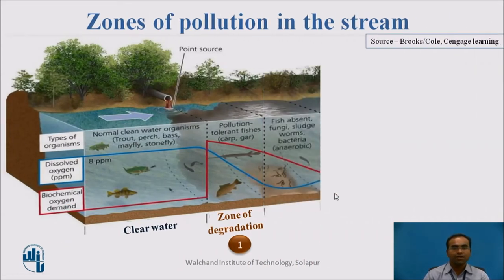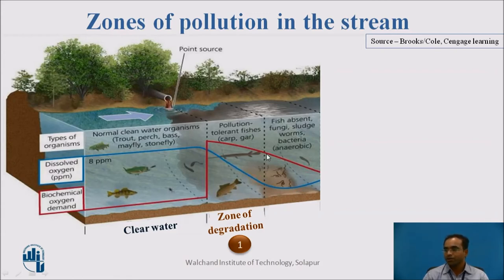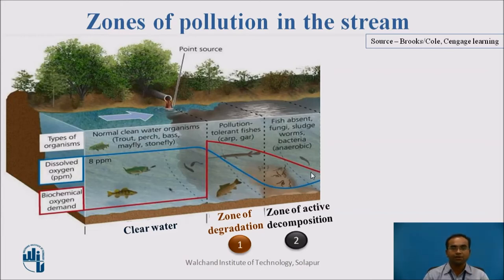The next zone is one where all fish and aquatic life are absent, because the bacteria that proliferated in the Zone of Degradation have moved into this zone and consumed all the food. The DO level here is very much lower — almost zero — and BOD is still decreasing as decomposition continues. We call this the Zone of Active Decomposition.